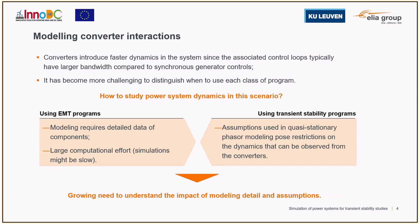So how do we study power systems in this scenario? If studies are carried out using EMT, there will be a need for detailed component data and simulations will tend to be slow. If simulations are carried out with transient stability programs, we need to be sure they still provide accurate results. The conclusion is that there is a growing need to understand the impact of modeling detail and simplifying assumptions, in order to determine the limits of transient stability programs and when to move to more accurate representations.